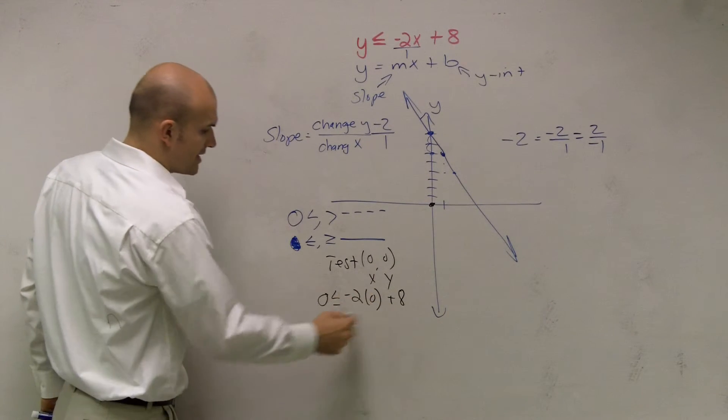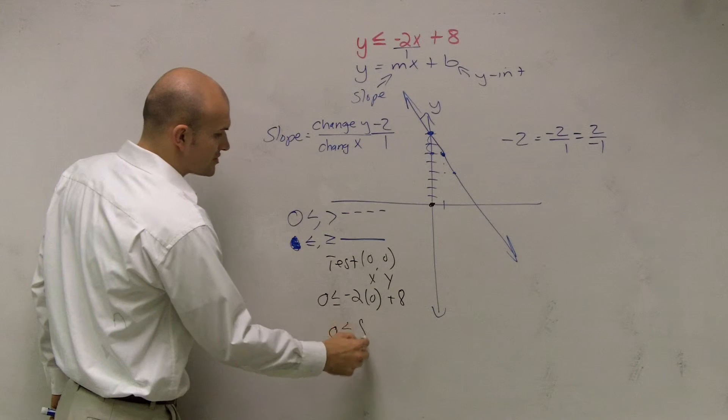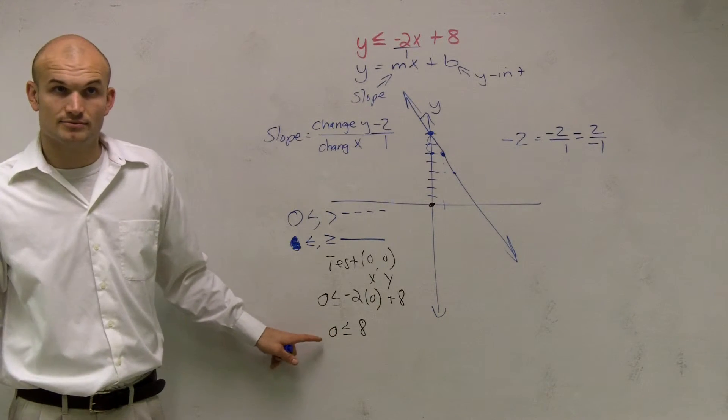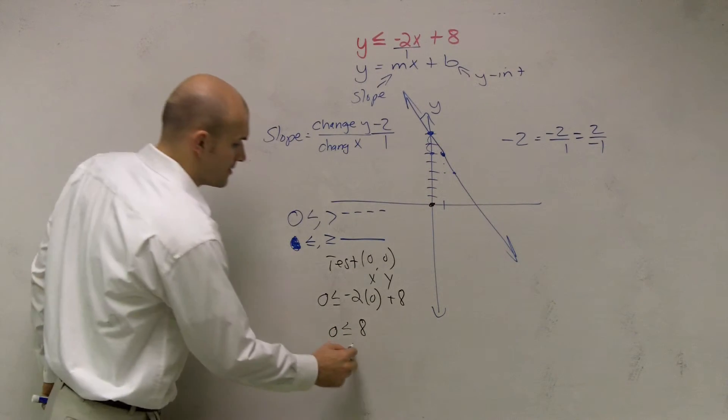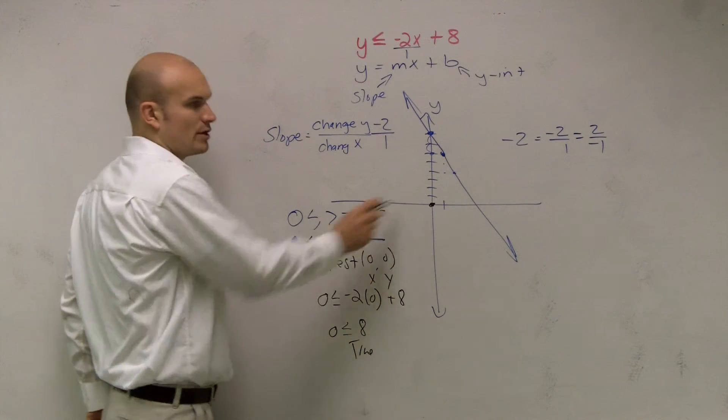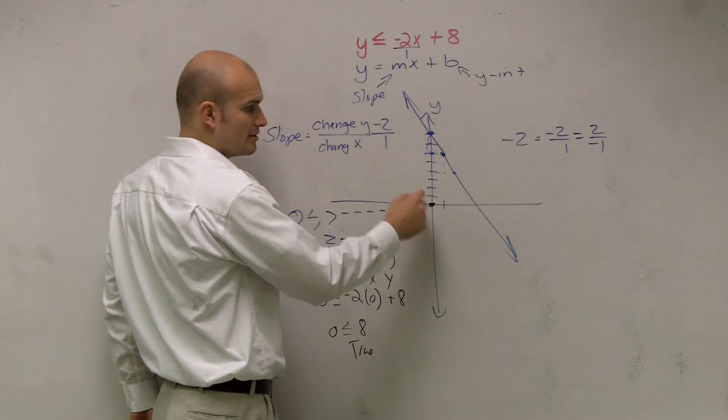Therefore, that gets 0. 0 is less than or equal to positive 8. Is that true or false? True. So where is (0, 0) on the graph? (0, 0) is right here, and that's true.